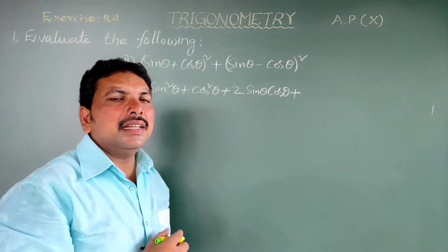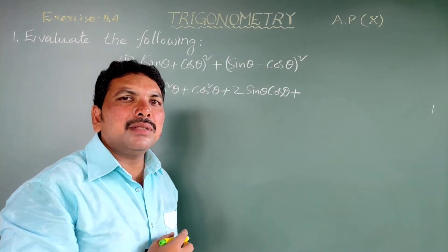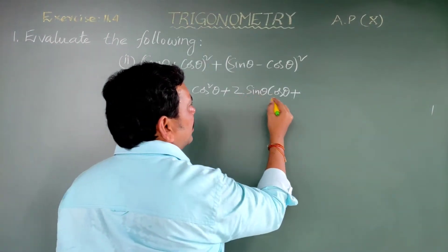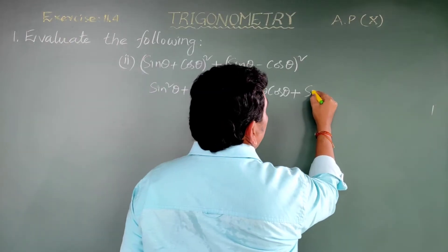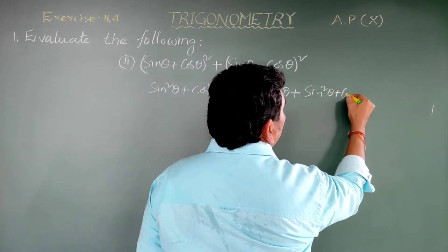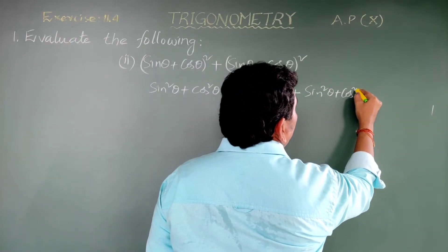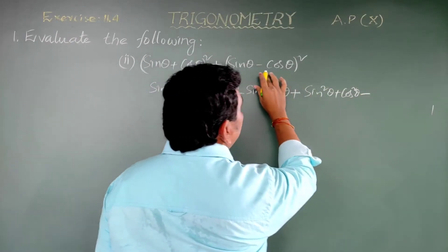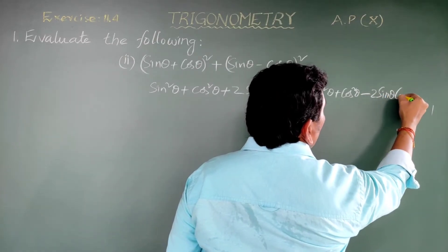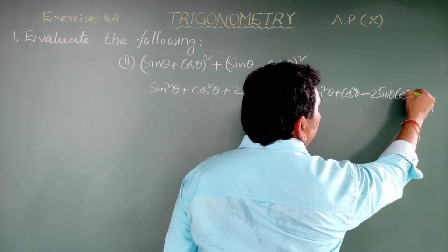And (a-b)² = a² + b² - 2ab, so this gives sin²theta plus cos²theta minus 2 sin theta cos theta.